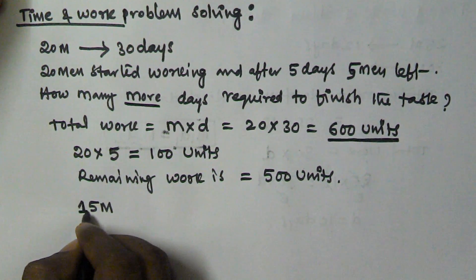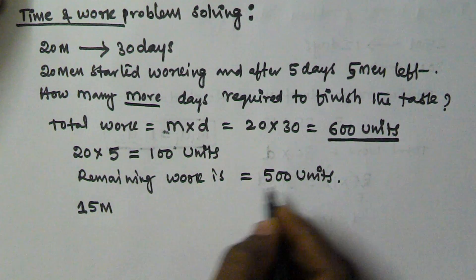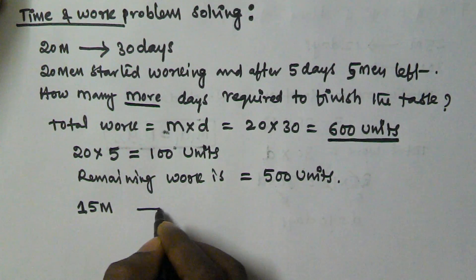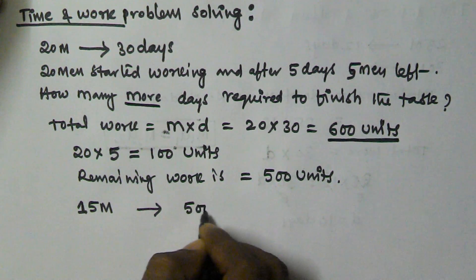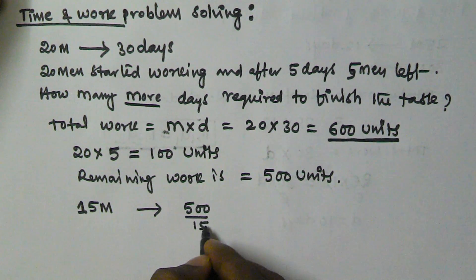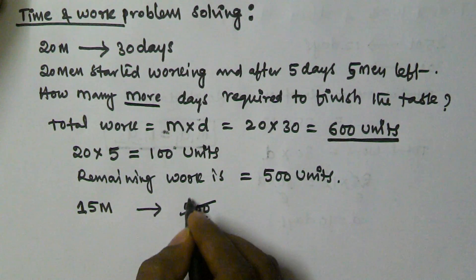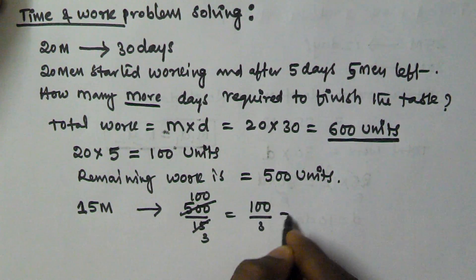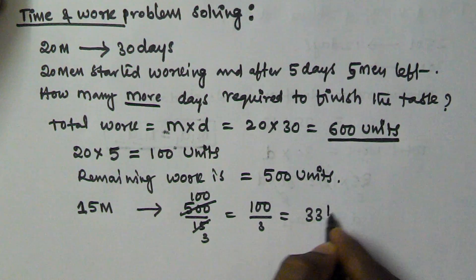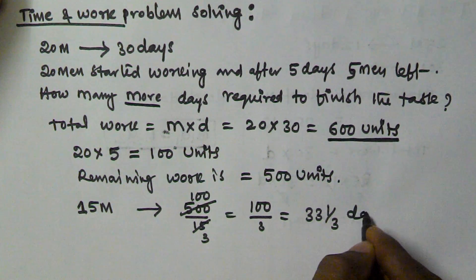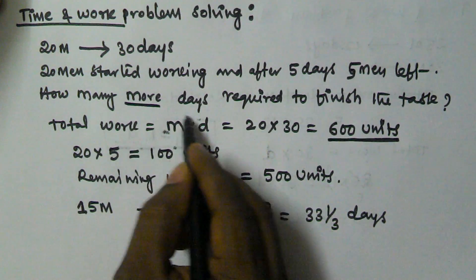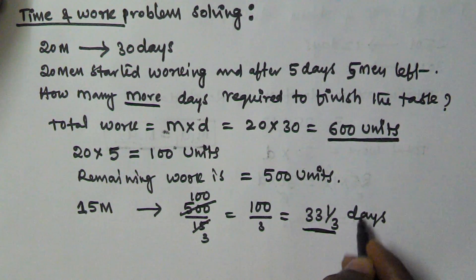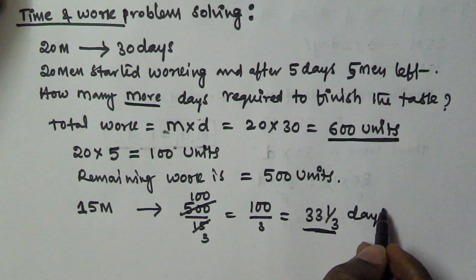So now we have to find how many days the 15 men took to finish the 500 units. So that is 500 by 15, which is equal to 100 by 3, that is 33 and 1 by 3 days. So how many more days required to finish the task? That is 33 and 1/3 days are required to finish the task.